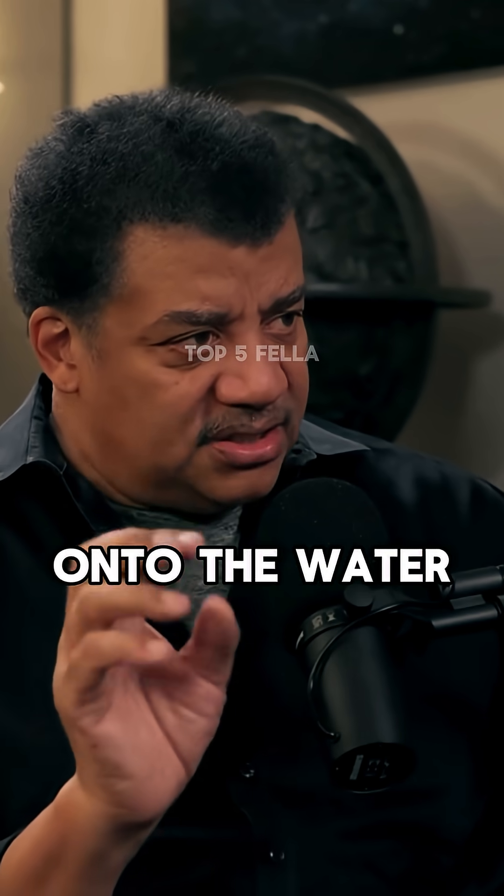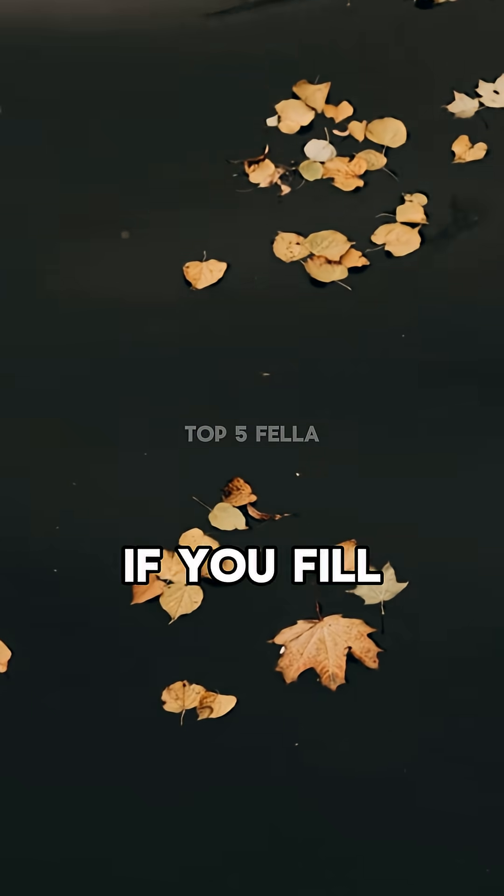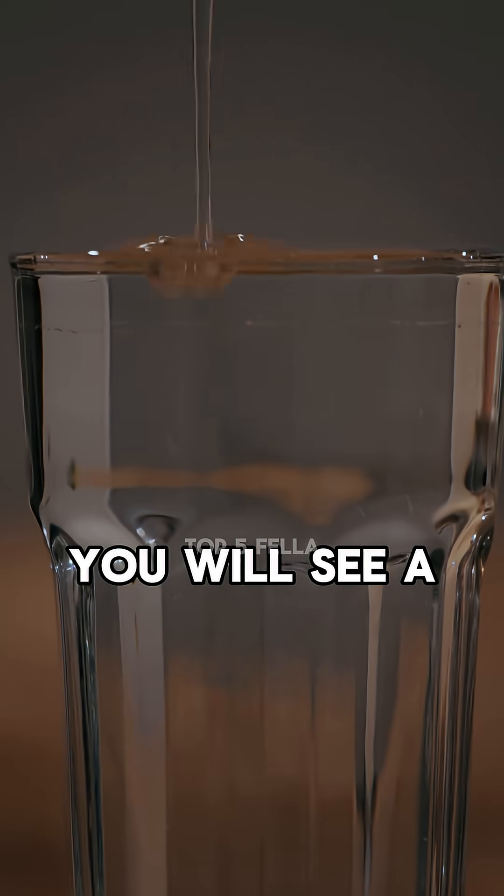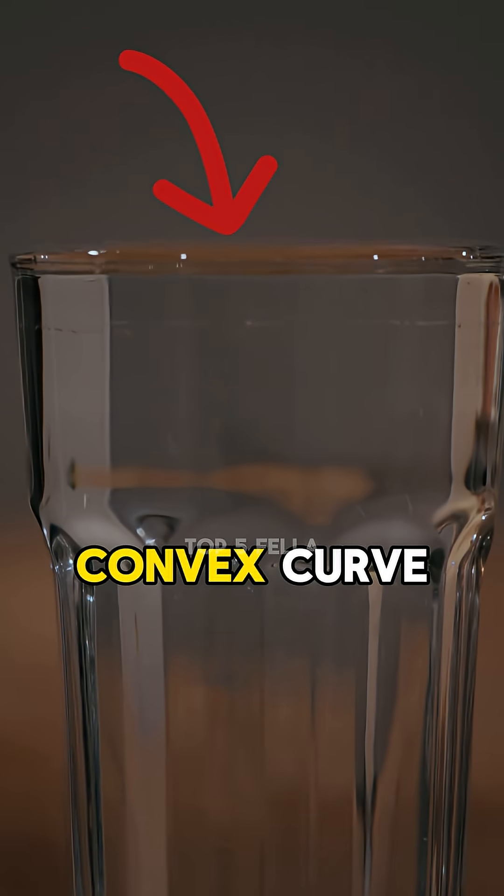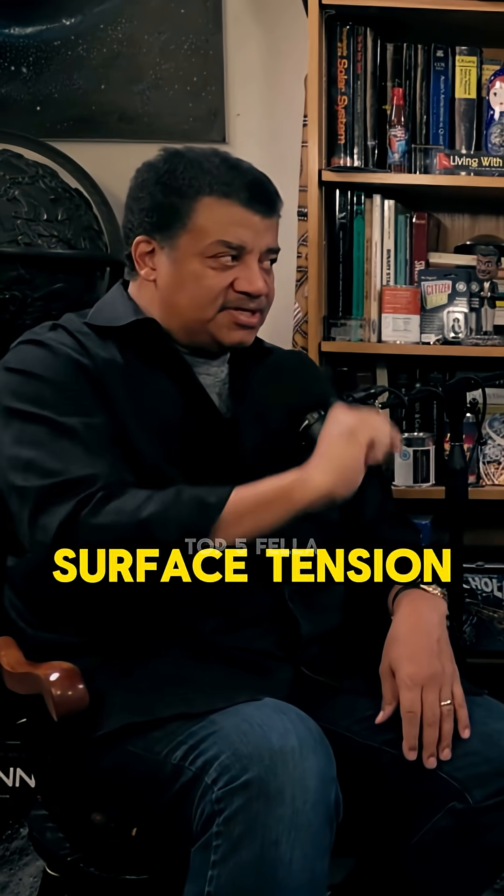That's why you can toss a leaf onto the water and it doesn't just sink. If you fill a vessel very slowly and very carefully, you will see a convex curve on the surface of the water as you come up to the top. That's surface tension.